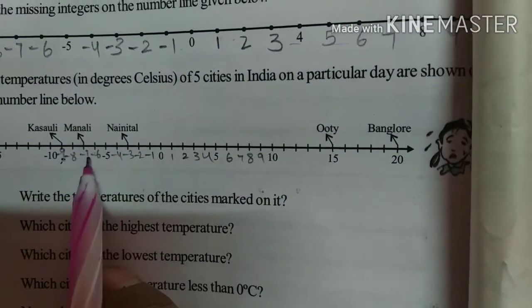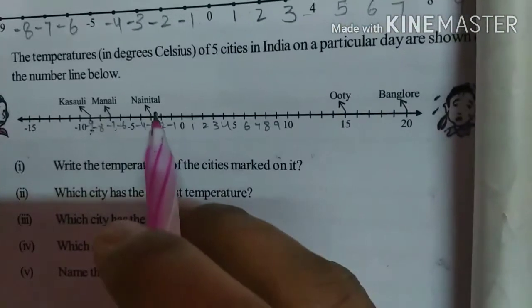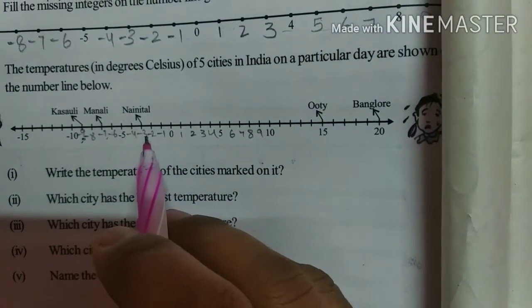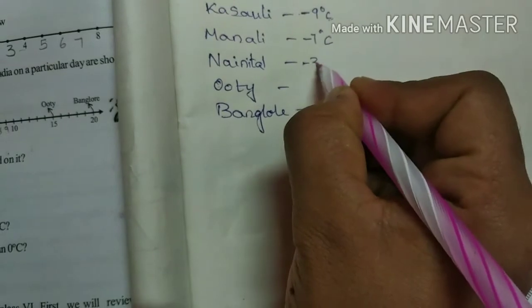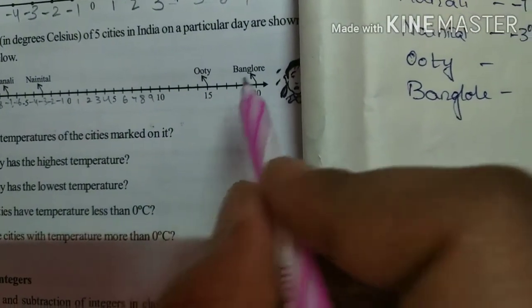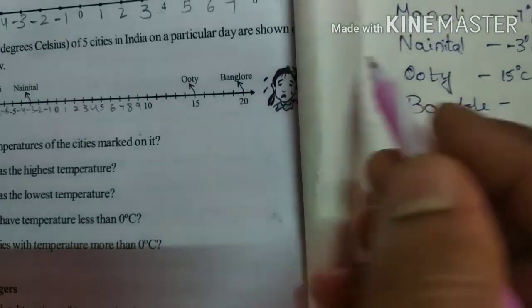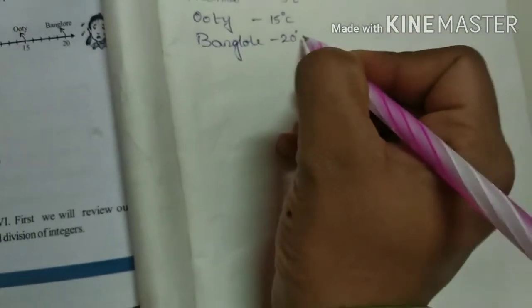Next, Manali — minus 7 degrees Celsius. Naintal — minus 3 degrees Celsius. Next, Ooty: directly they gave 15, so 15 degrees Celsius. And Bangalore — 20 degrees Celsius. That's all for the first sub-question.